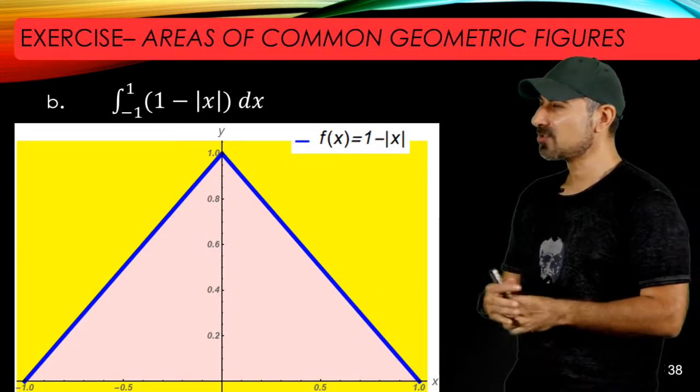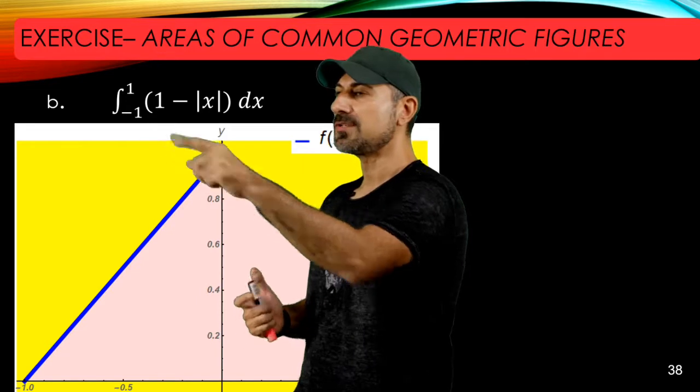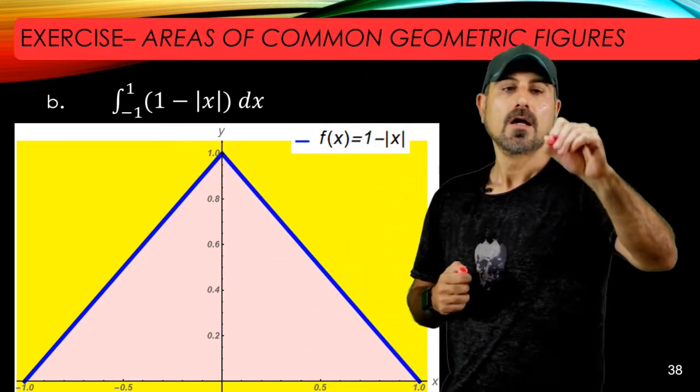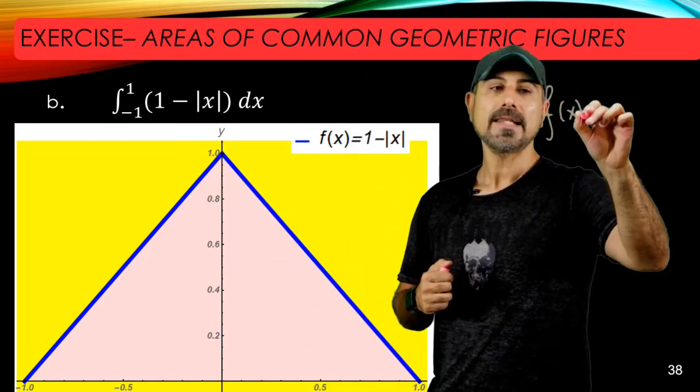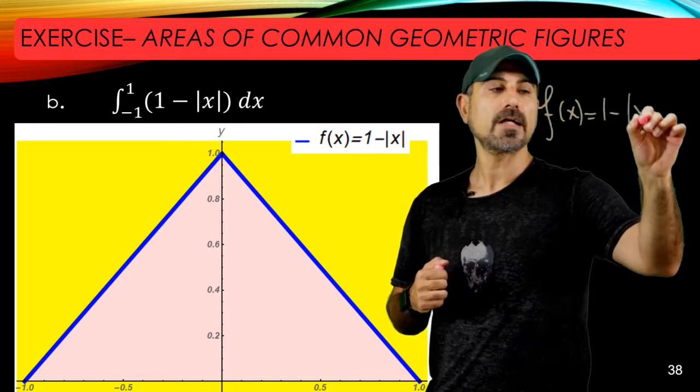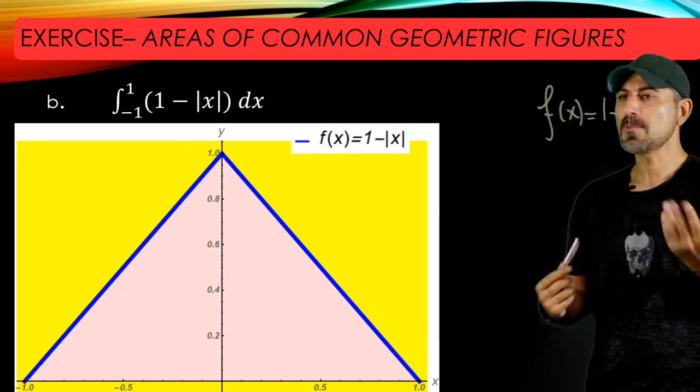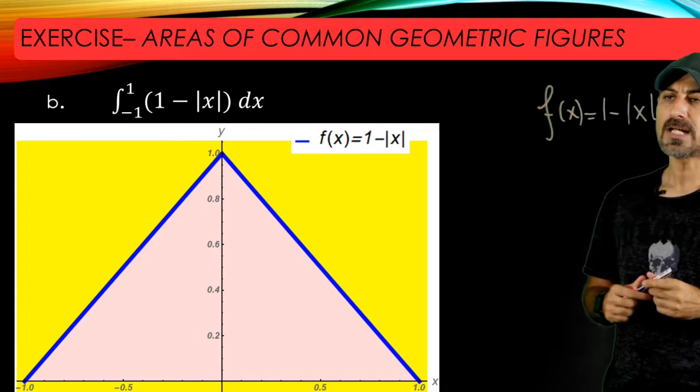All right, for part b, we have to elaborate a little bit more because we have the function to be one minus the absolute value of x. So at this moment, you should remember the definition of the absolute value function.